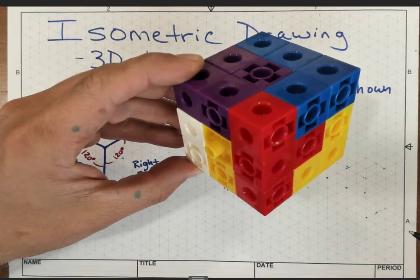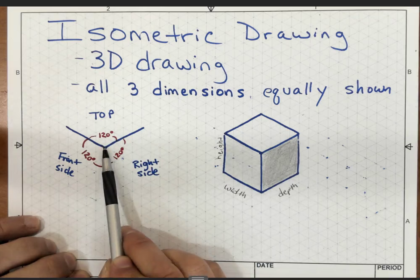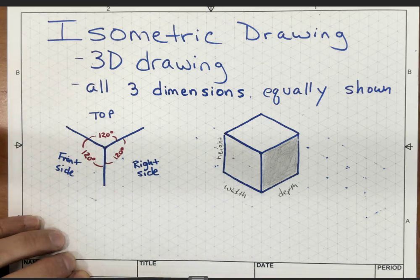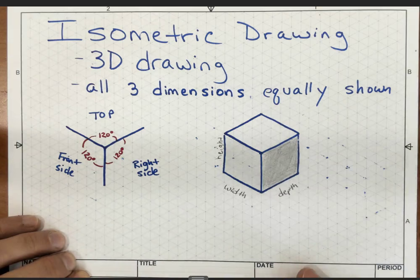We have special graph paper used to draw isometric drawings, called isometric graph paper. If you look at the lines and bring together the vertical line—you should always have a vertical line with isometric drawings—with the other two directions, you form the letter Y. The angle between these lines is all 120 degrees. Because they're all equal, that is why we're presenting all these dimensions of width, depth, and height equally.